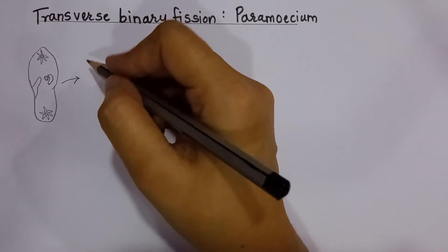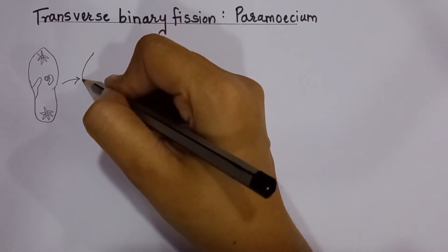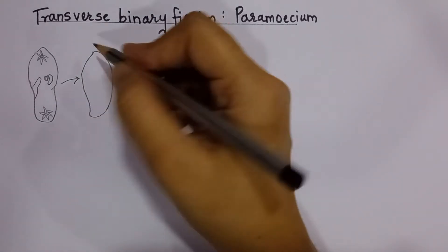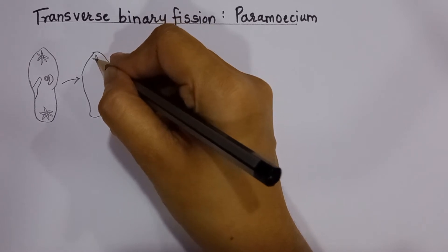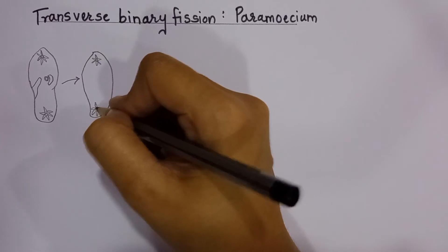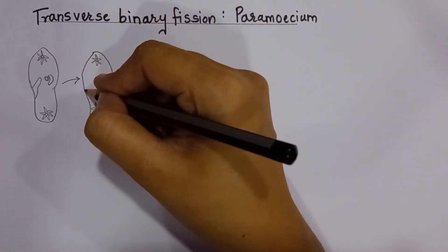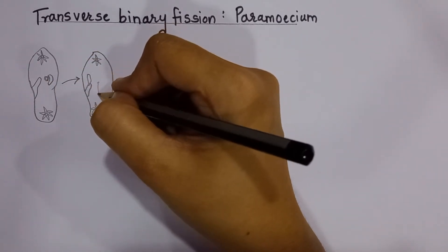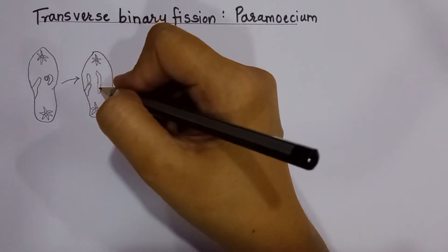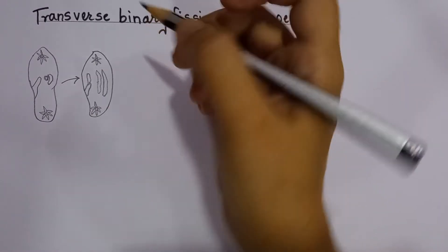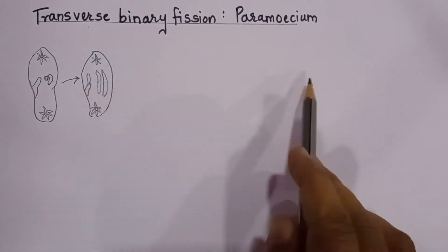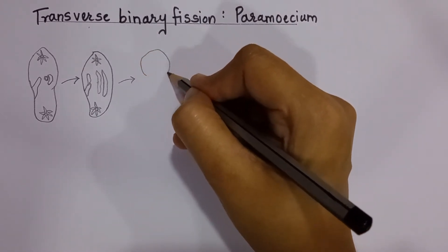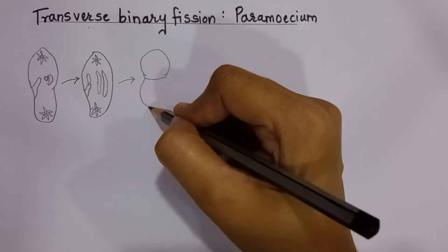In the second part, certain materials inside this organism start dividing. These two structures — one at the top, one at the bottom — are drawn as before. This part is doubling: this small part is extending and this part is also extending. Transverse means horizontally, so this particular organism is going to divide horizontally.